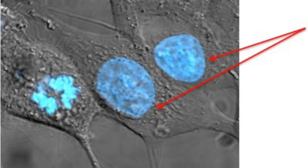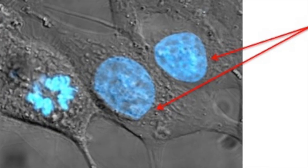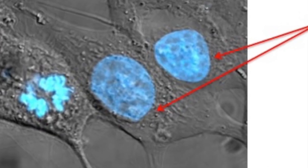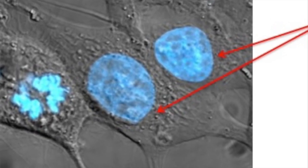The nucleus is the largest organelle of an animal cell, except red blood cells have no nucleus. It contains the whole genome of an organism and controls all cellular activities.